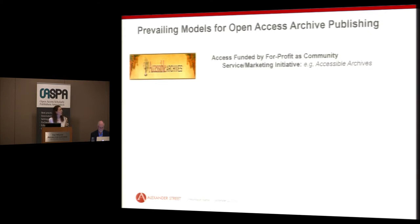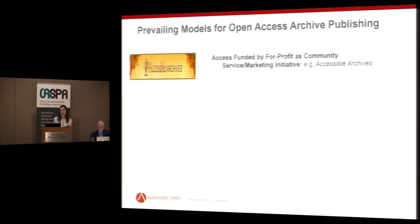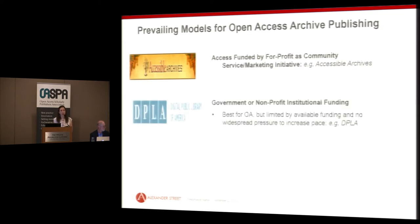We found that there are three different ways that archives may choose to publish their work. One is when access is funded by some sort of for-profit entity, whether it's a publisher like Alexander Street or a private individual. Accessible Archives is an initiative like this — an online portal that hosts thousands of pages of primary sources. One of the drawbacks is that you're limited to private funding, so there's always the risk that the business could go under and long-term sustainability is sometimes called into question.